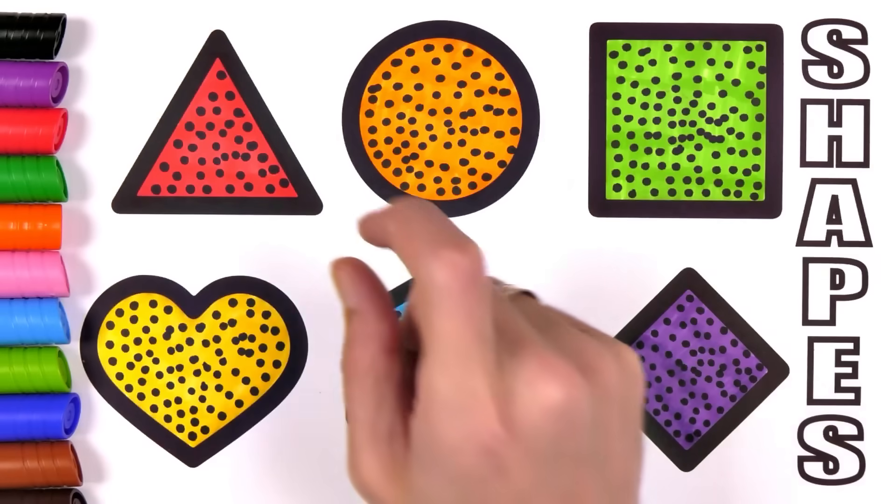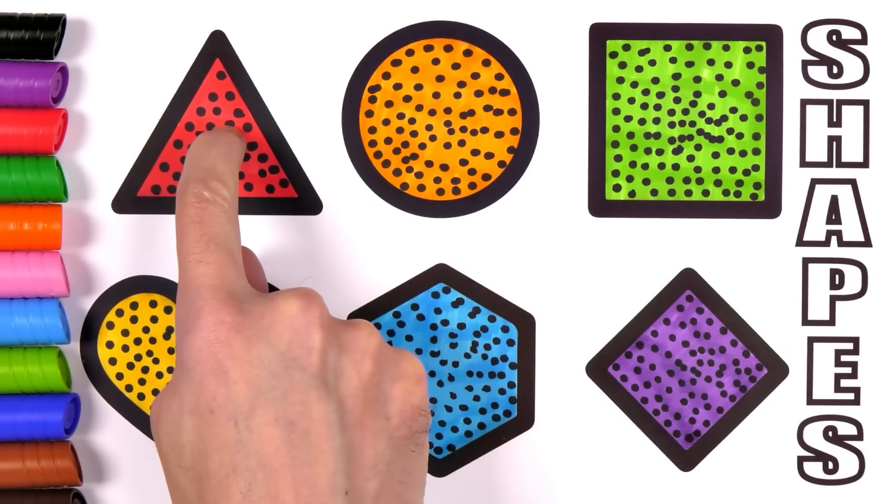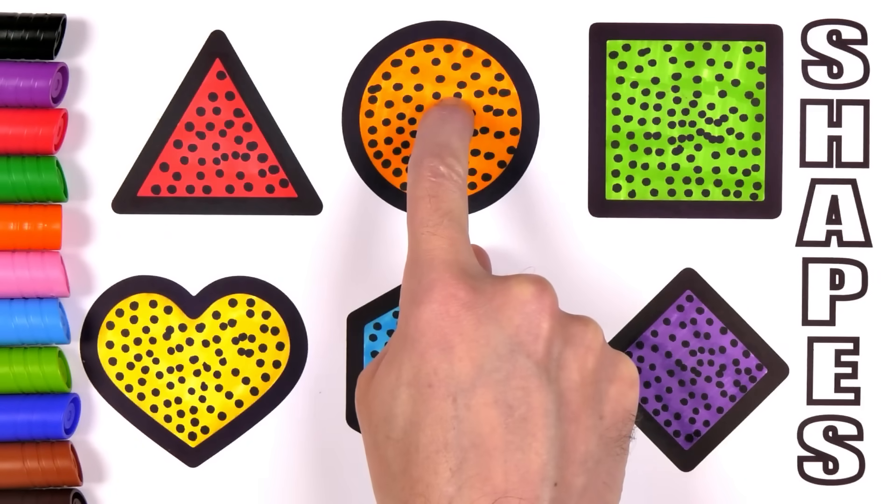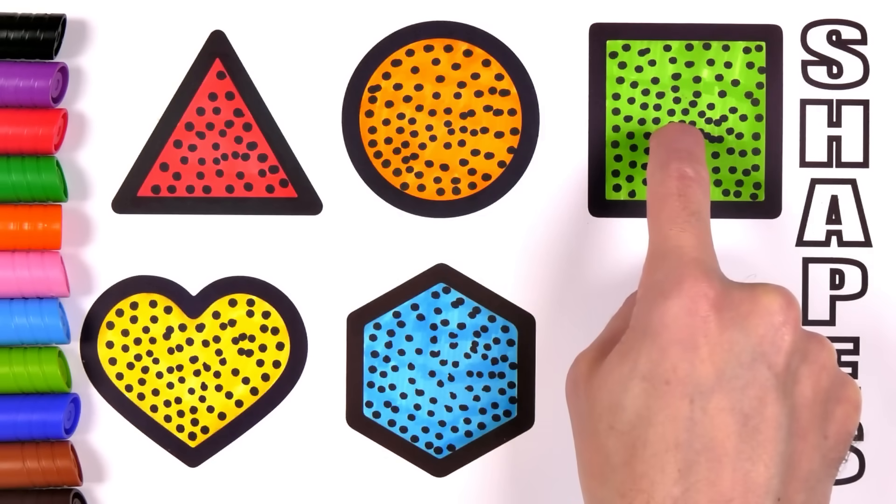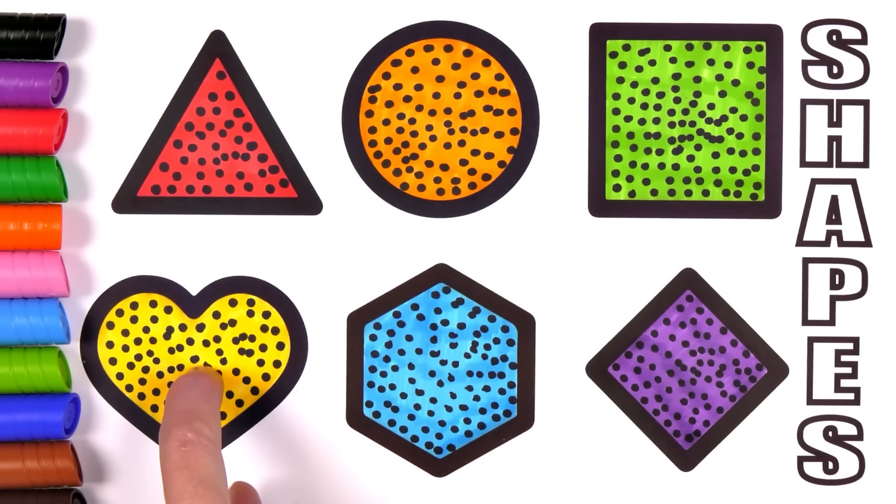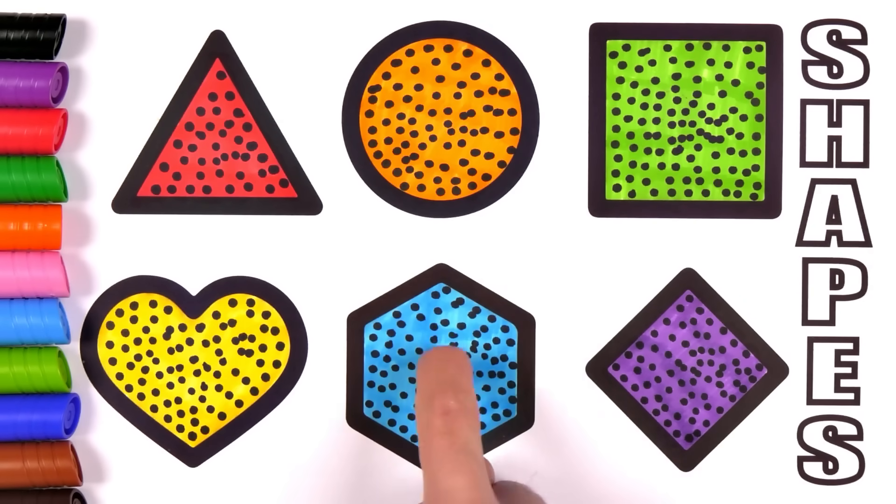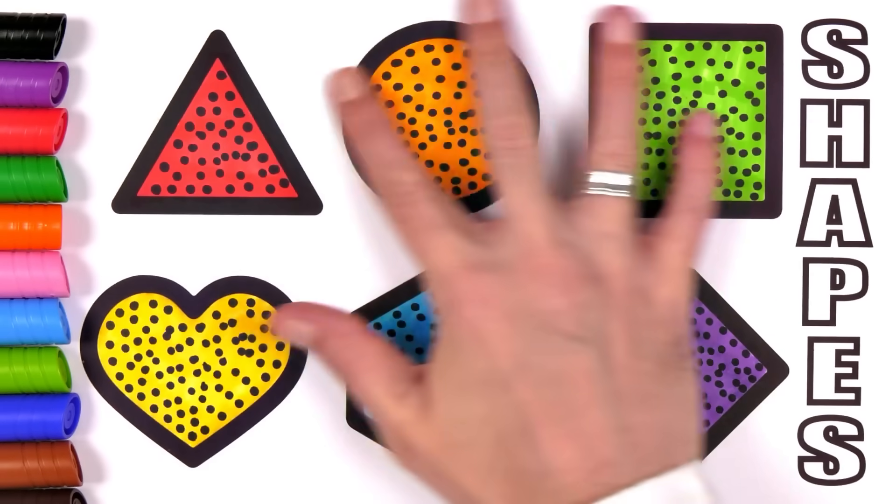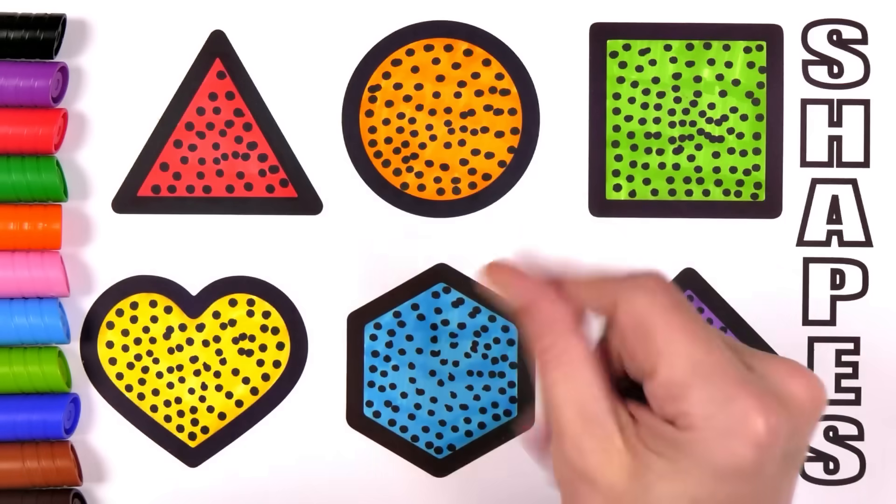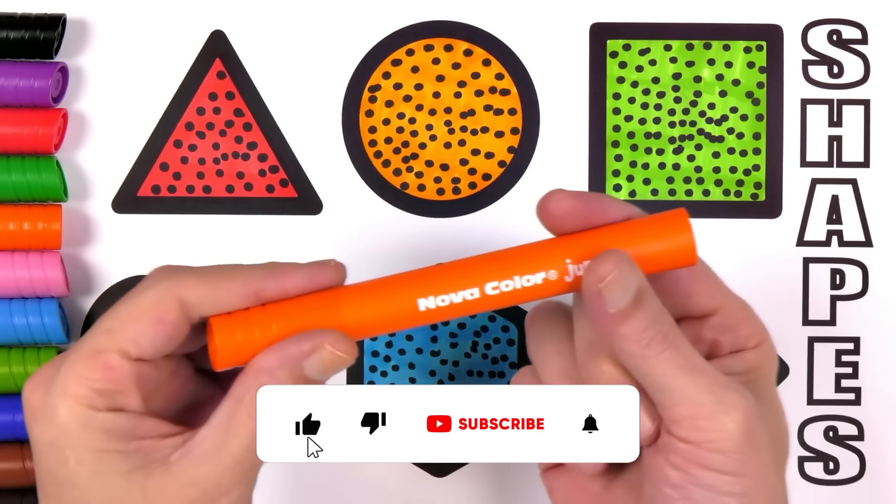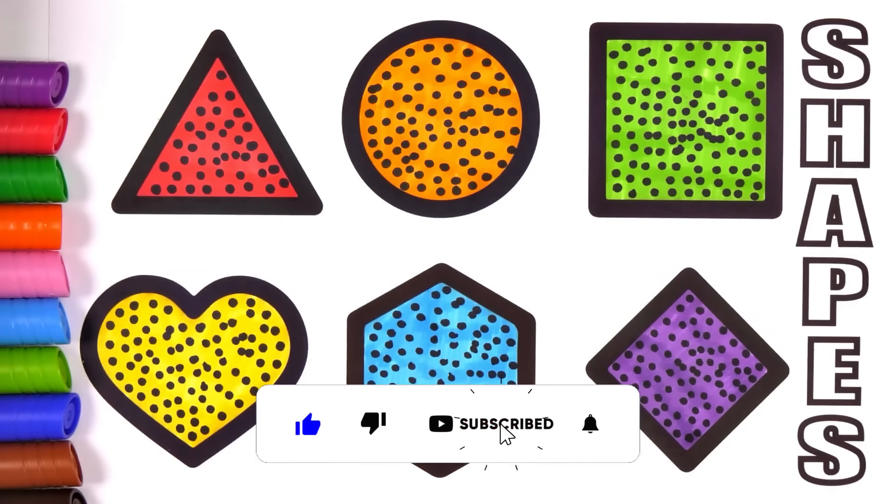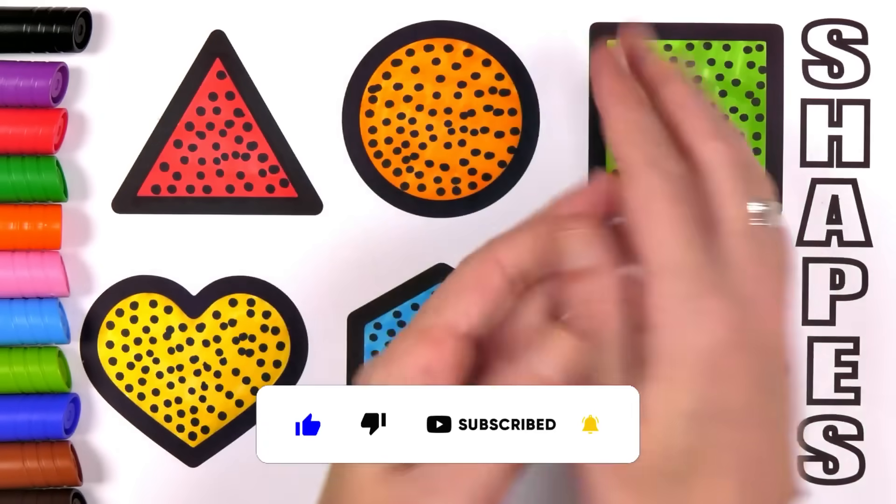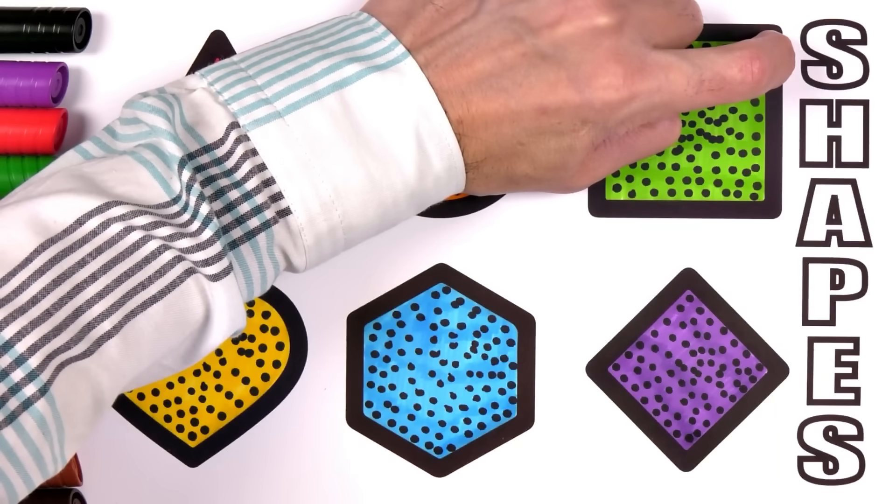Wow, it looks great! Triangle, Circle, Square, Heart, Hexagon, Diamond. Who loves coloring pages more? You or your crayons?